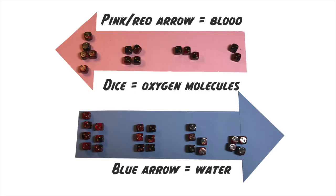Before we get into the actual discussion of how this works, let's make sure we're all on the same page in terms of the icons I'm going to use in this explanation. The pink or red arrow represents blood. The blue arrow represents the water current. The dice represent oxygen molecules — you can guess why the number two is turned up on all of those. The arrowhead points in the direction that the current is flowing.